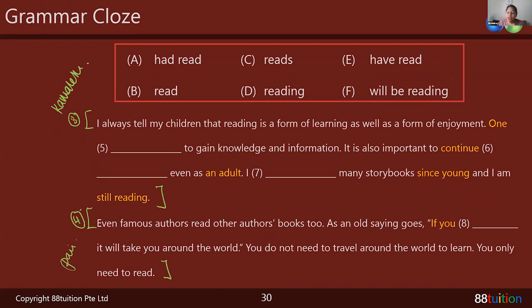I always tell my students that reading is a form of learning as well as a form of enjoyment. One blank — to gain knowledge and information. So what can this be? The sentence says 'one, to gain knowledge and information' — this is the purpose. Anyone wants to help with question five? Rushita answers: 'reads.' Excellent. One reads to gain knowledge and information — this is singular subject-verb agreement. So 'one reads.'